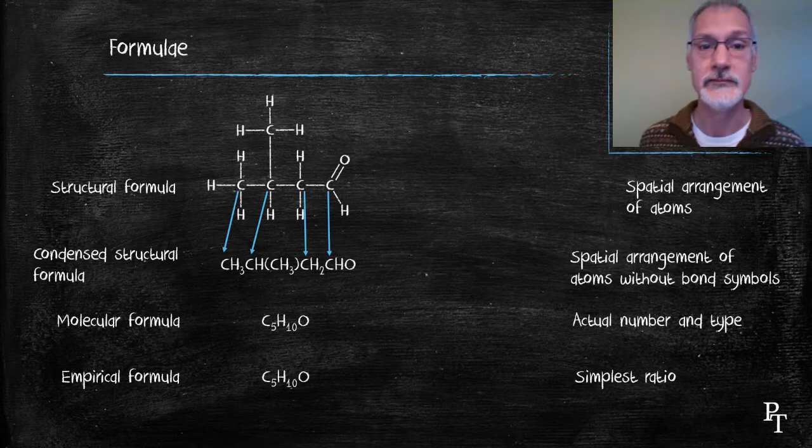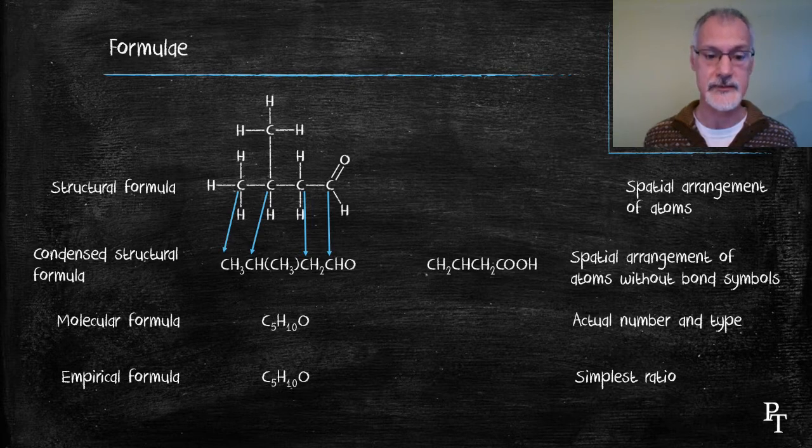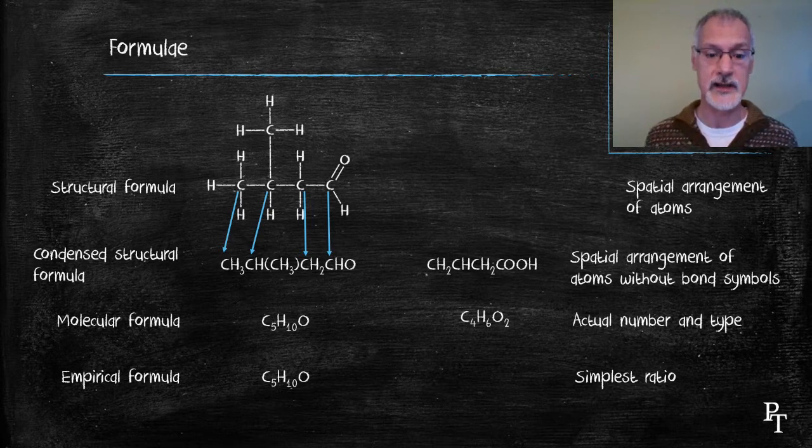Let's take a look at another one. So, I'll begin by converting this to a molecular formula by counting the carbons and the hydrogens and oxygens. And now, this can be reduced further to lowest terms by dividing each by 2, C2H3O.